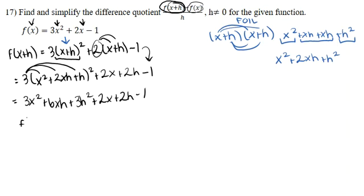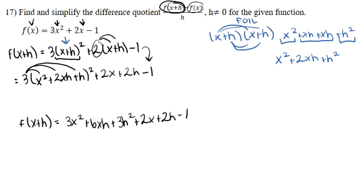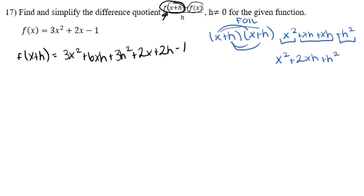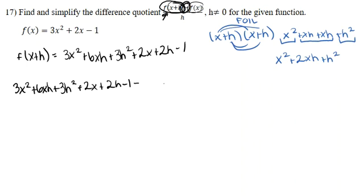Now we know f of x plus h equals 3x squared plus 6xh plus 3h squared plus 2x plus 2h minus 1. We plug this into the difference quotient formula. The subtraction sign subtracts the entire original f of x — not just the first term — so we put it in parentheses: (3x squared plus 2x minus 1), all divided by h.